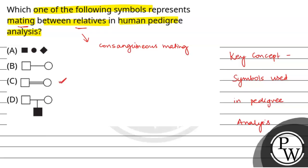These are basically the affected individuals. This is simply mating. And fourth is parents having an affected child. So the final answer for this question is option C, double dash between the square and circle.